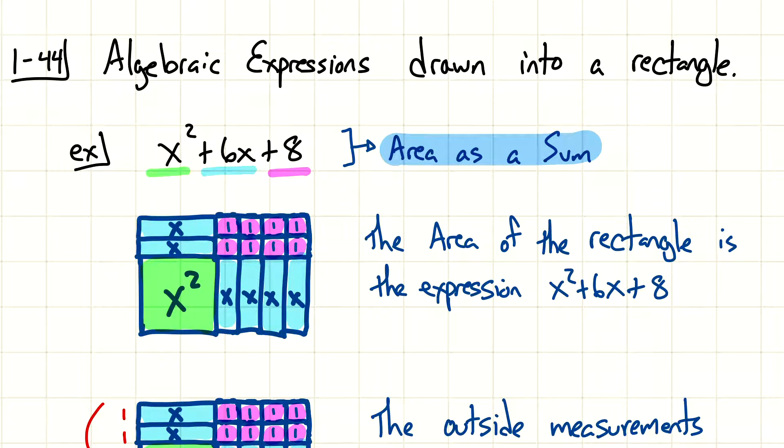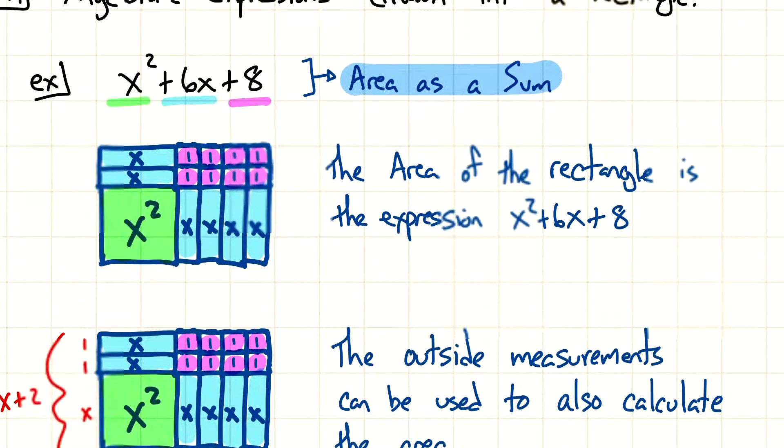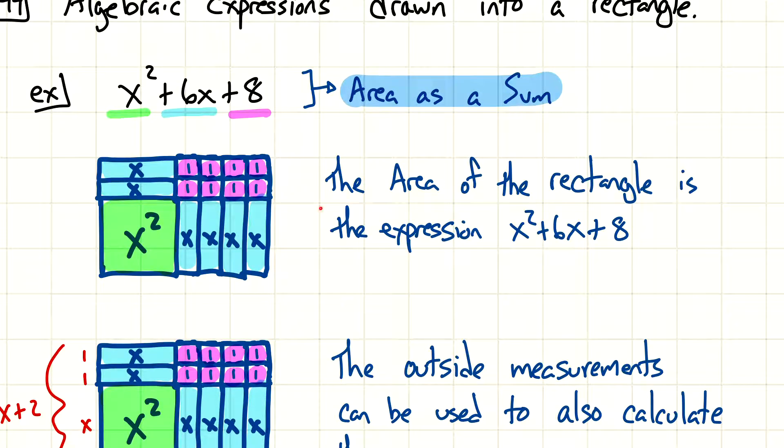Alright, so, areas of sum means, let's add up all these areas. If we add them all up, it's going to be a total of x squared plus 6x plus 8. So, that's what we refer to as areas of sum. The area of the rectangle is the same as this expression, x squared plus 6x plus 8.